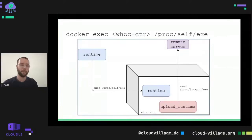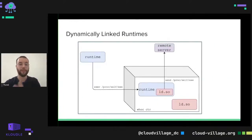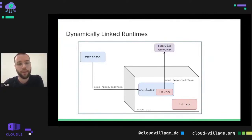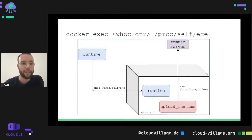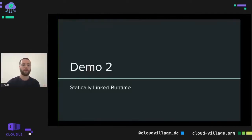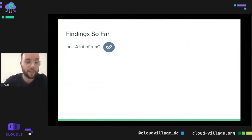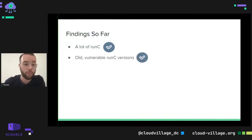That's really how Hoosie is implemented. You have the wait-for-exec flavor, which is for statically linked runtimes, and you have the dynamic linker flavor, which is for dynamically linked runtimes. When I took Hoosie to real container-as-a-service platforms, I actually saw both — dynamically linked runtimes and statically linked runtimes. With that, let's talk about the findings so far. As I expected, I saw a lot of RunC, which is really the industry standard container runtime. But I also saw old and vulnerable RunC versions, which led to some quite interesting research that I can't yet disclose.